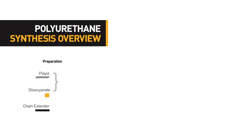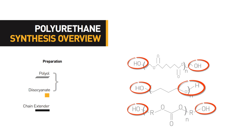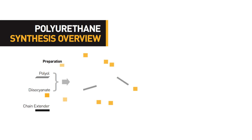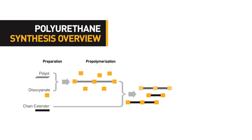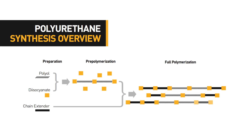The polyol is a high molecular weight ester, ether, or carbonate capped with a hydroxyl group on both ends. In the pre-polymerization method, this polyol is reacted with an excess of diisocyanate to form a pre-polymer. After the pre-polymerization, a low molecular weight diol called a chain extender is added to link the pre-polymer molecules together to form the full polymer — a polyurethane with a narrower range of molecular weight.